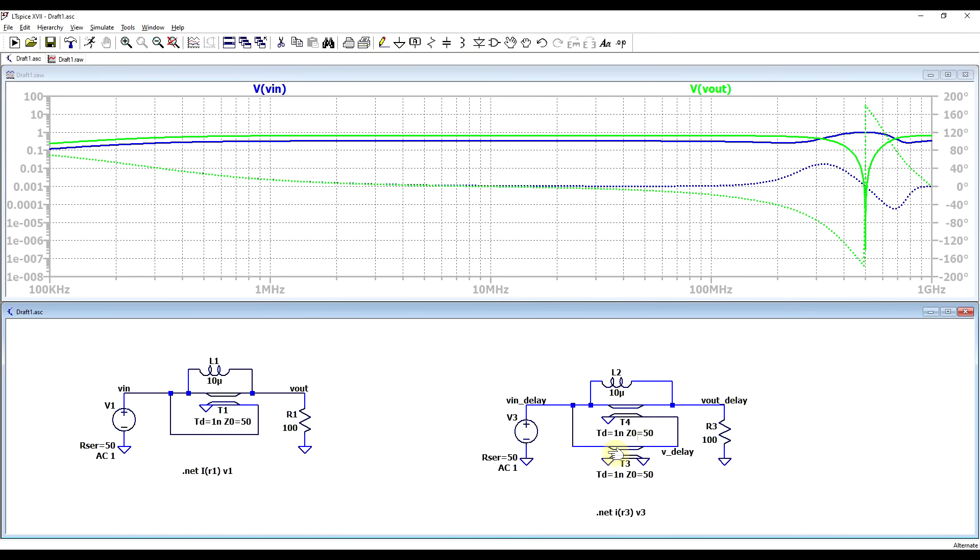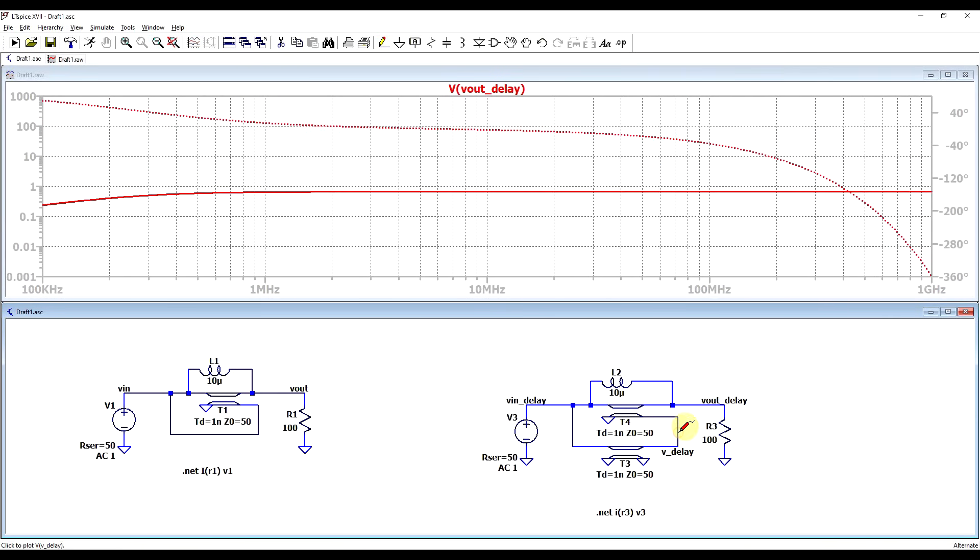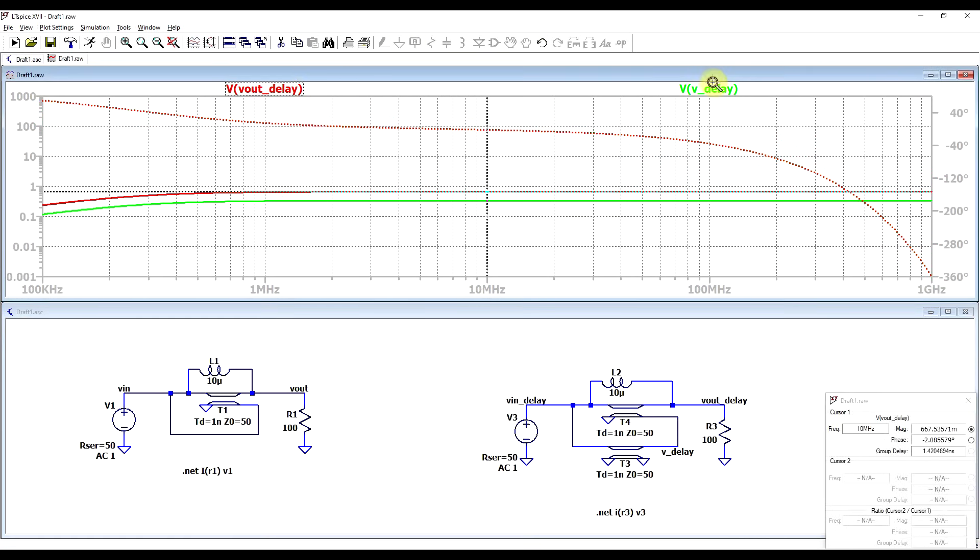Now if we add in our delay line and we look at the output voltage and the voltage coming through the delay line, we are getting a completely different story. The two voltages that arrive at the end have a consistent phase shift, so there is a phase shift in reference to the input, but there is no phase shift in between the two signals, so the total output voltage stays constant and flat.